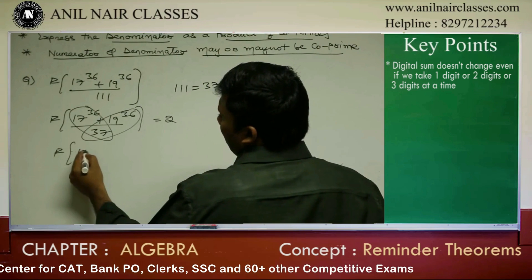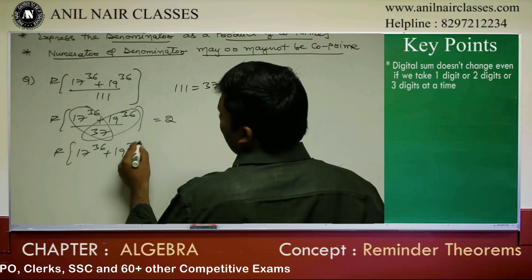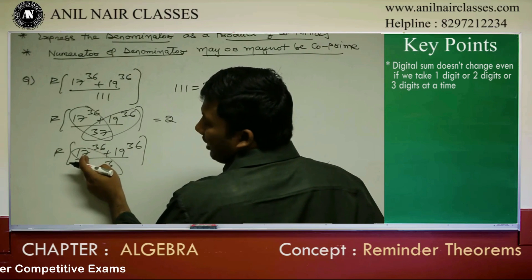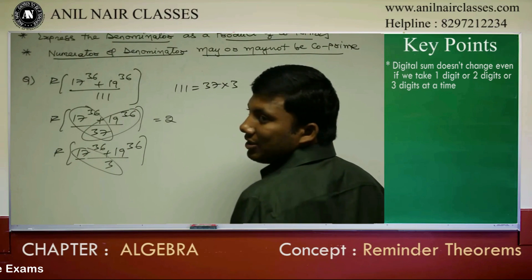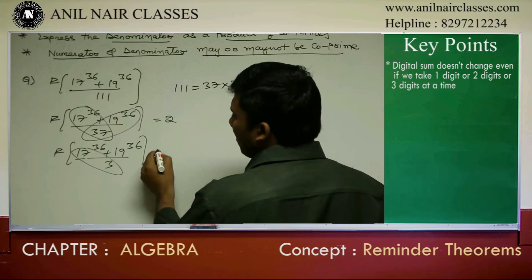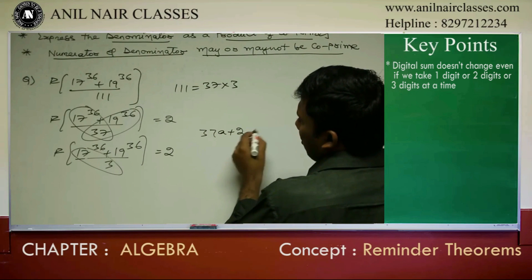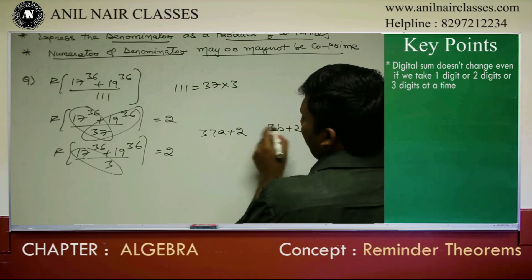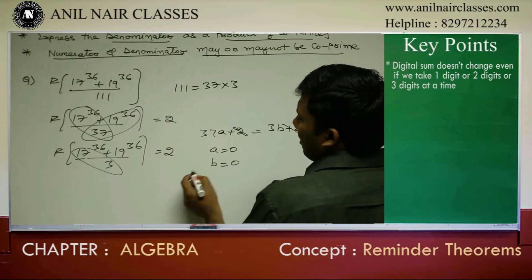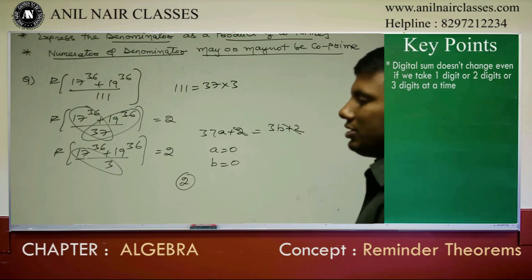Now, 17^36 plus 19^36 divided by 3: 17 divided by 3 gives remainder 2, which is 18 minus 1, so minus 1 power is 1. 19 divided by 3 also gives remainder 1. So 1 plus 1 is 2. Therefore, the numerator is of the form 37a plus 2, and also 3b plus 2. The answer is remainder 2.